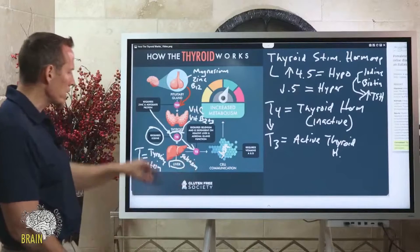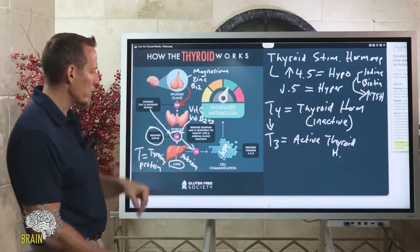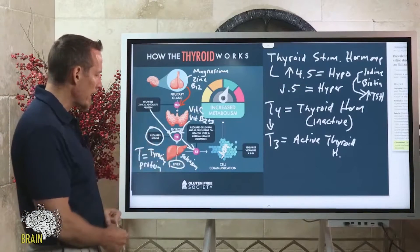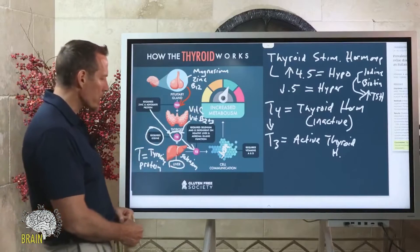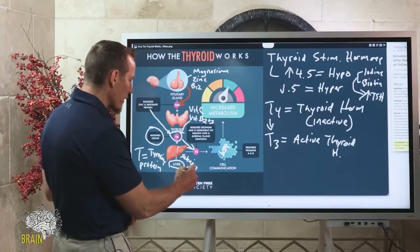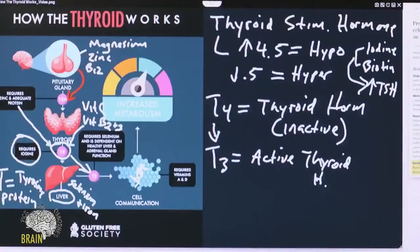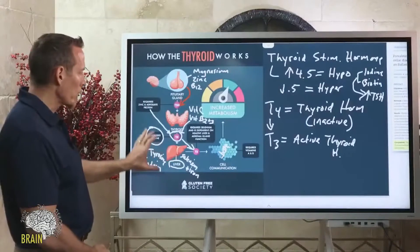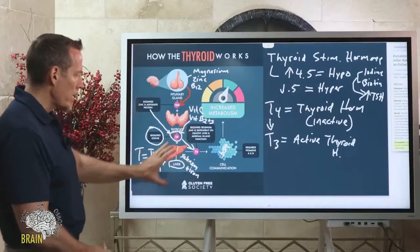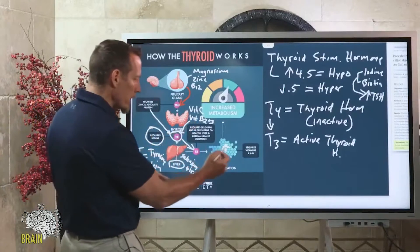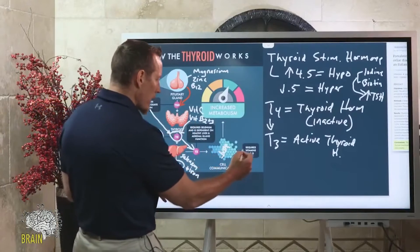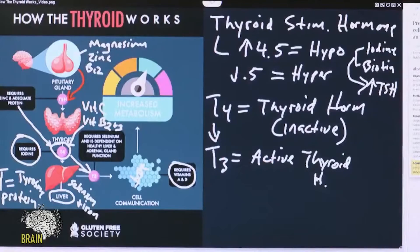The conversion from T4 to T3 requires selenium. A diiodinase enzyme removes one iodine molecule from T4, leaving T3 — that process requires selenium. The conversion also requires iron, which is why iron is a key nutrient along this pathway.